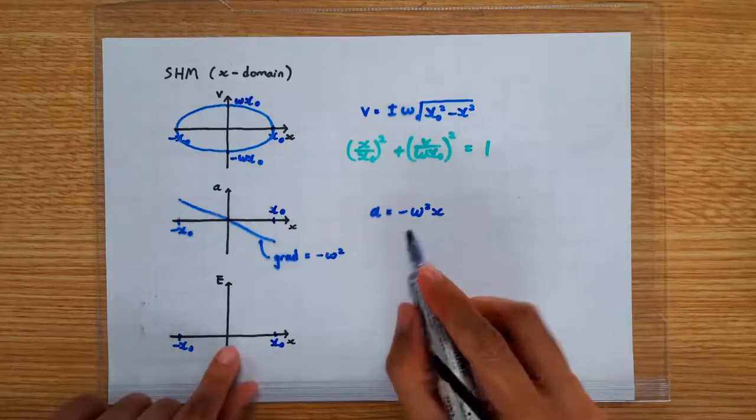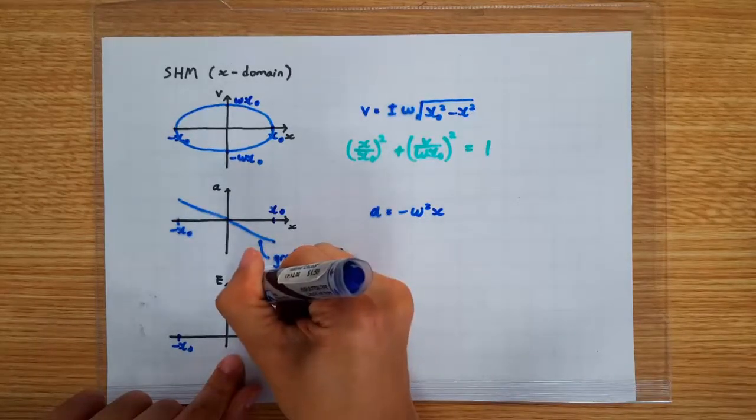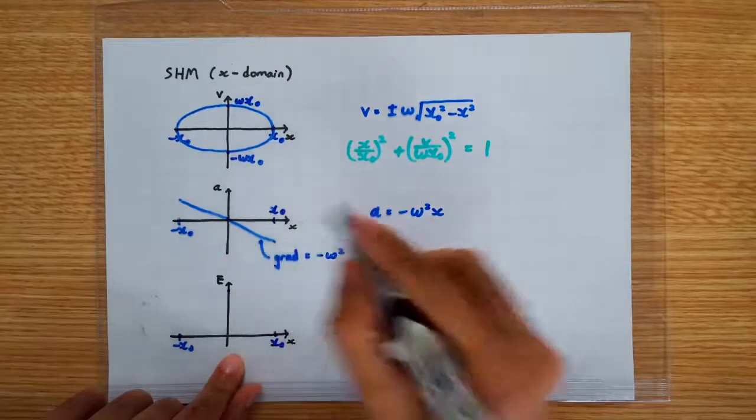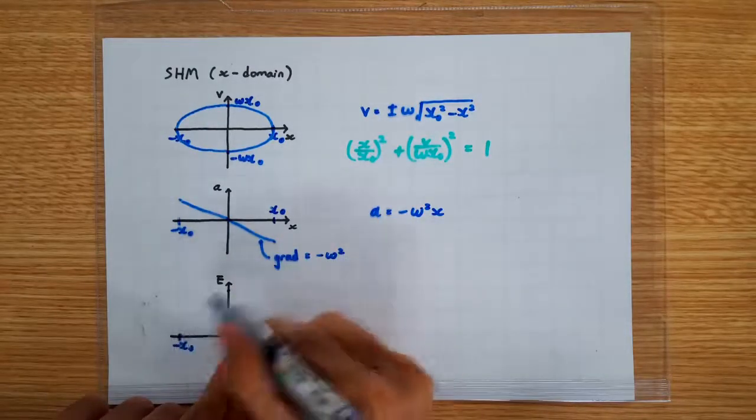At the equilibrium position, the oscillation is at its maximum speed. And so these are three points that lie on our graph.